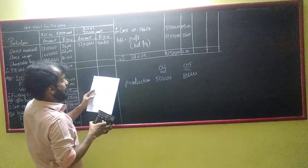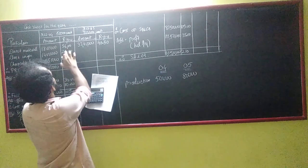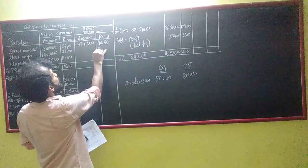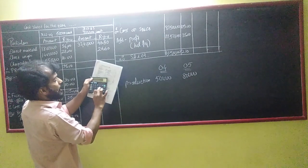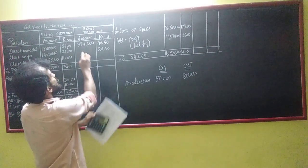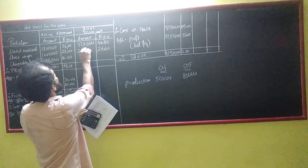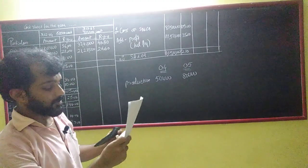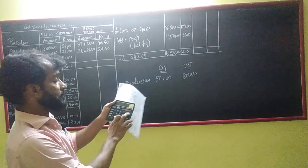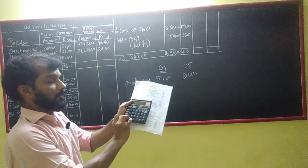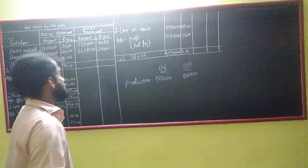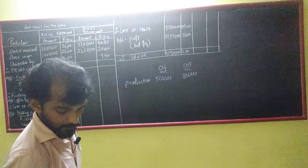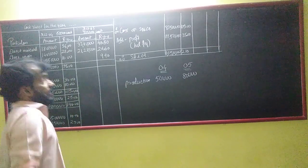Direct labour rate per unit will decrease by 5%. Labour was 28, minus 5% gives 26.60 per unit. Into 80,000 units: 21,28,000. Similarly, chargeable expenses decrease by 10%: 11 minus 10% gives 9.90 per unit. Into 80,000 units: 7,92,000.